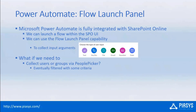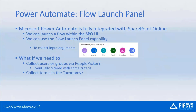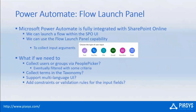However, what if we need to do something more? For example, we need to collect specific users or groups using the People Picker with filtering criteria, or collect terms using the taxonomy of SharePoint Online. Taxonomy is becoming very important again in content management and information architecture. So why not use it to collect additional input for our flows, support multi-language UI, or apply validation rules on input fields?